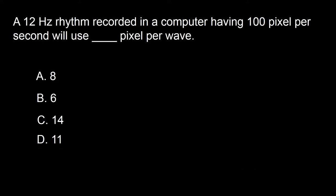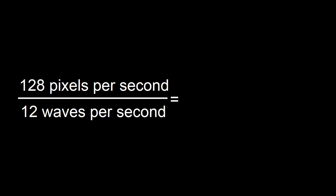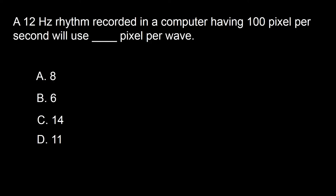Next question: a 12 Hz rhythm recorded on a computer having 100 pixels per second will use dash pixels per wave. A: 8, B: 6, C: 14, D: 11. To answer this, simply divide the number of pixels per second by the hertz of the rhythm: 100 ÷ 12 = approximately 11 pixels per wave. The answer is D.